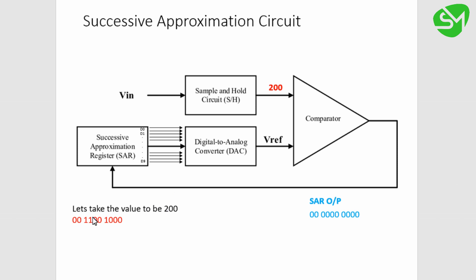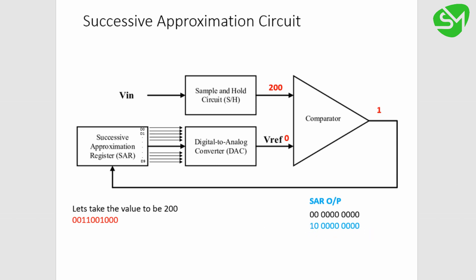In 10-bit representation, the value 200 is represented as 0011001000. Initially, the SAR output is 0000000000 and VREF is 0. Since 200 is greater than 0, the comparator output is 1. This 1 is fed to the SAR, which sets it to the MSB position — making the value 1000000000, which is 512 in decimal. This 512 is then fed through the DAC to the inverting terminal of the comparator.